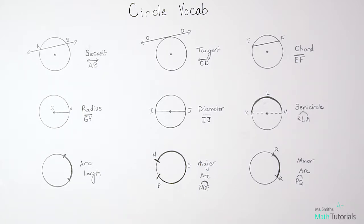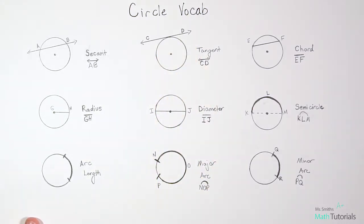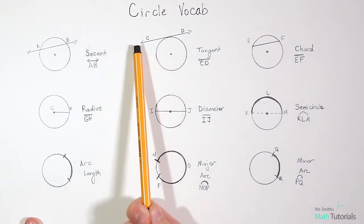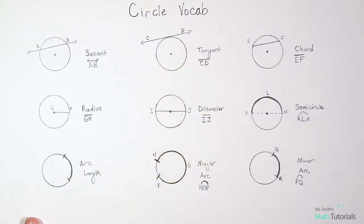The next one we're going to talk about is a tangent. Notice that a tangent also has two arrows at the end, but the difference here is this one comes through, touches the circle, and then keeps going. It doesn't actually cross through the circle like a secant would. So that would be a tangent.